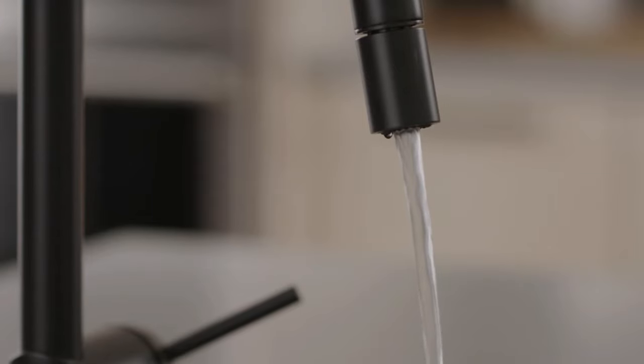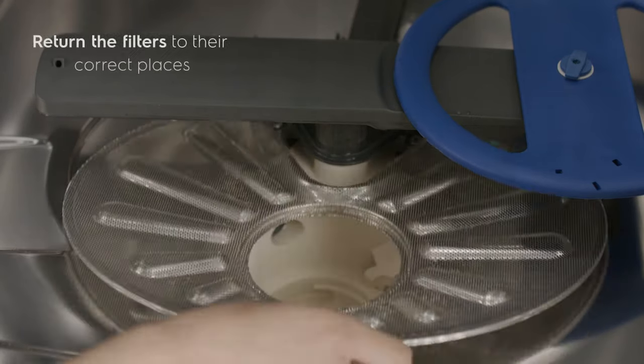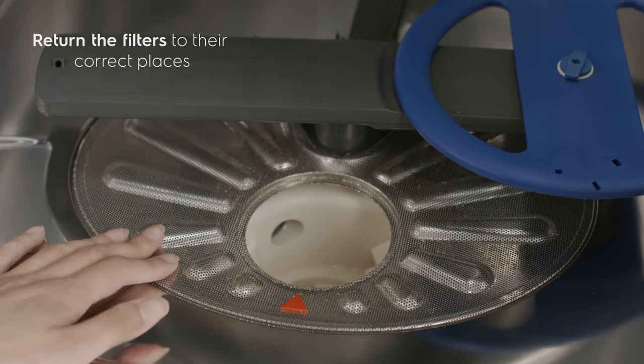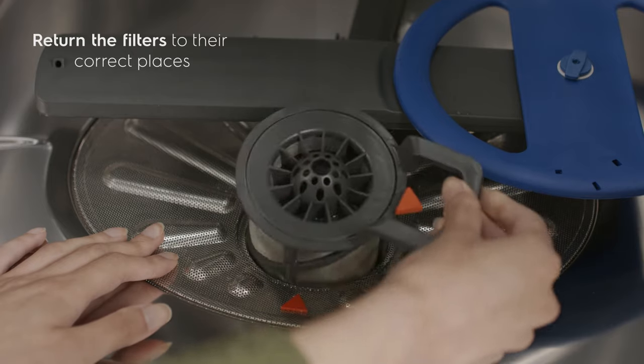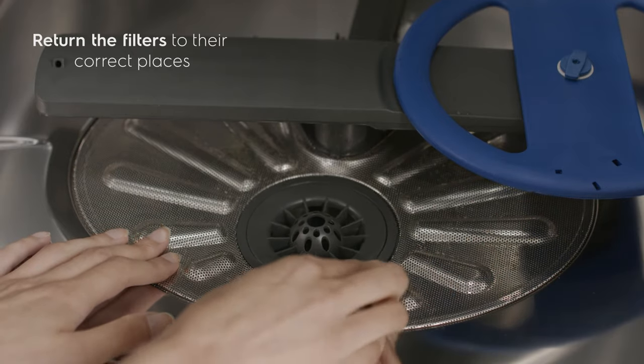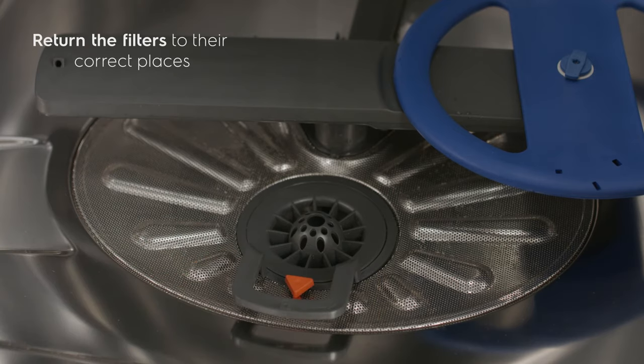Once you are done cleaning the filters, place them back in your dishwasher. Return the coarse filter to the tub bottom and replace the cylinder fine filter. Turn the cylinder fine filter 90 degrees clockwise to its original position. Make sure that it's all fully snapped into place.